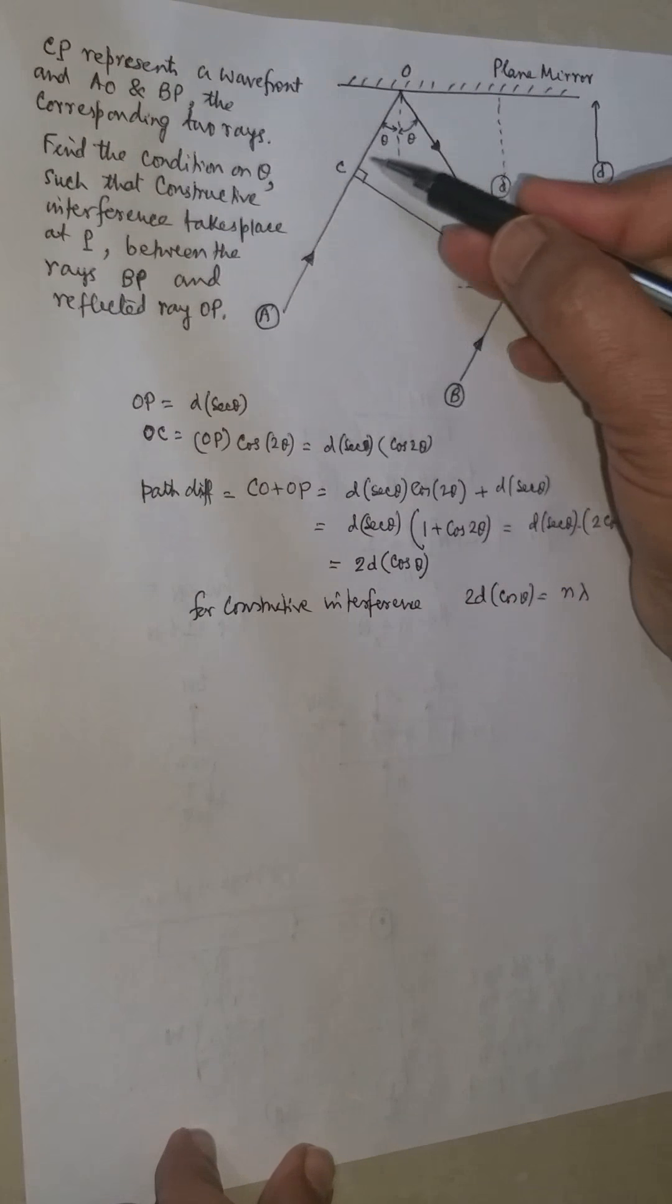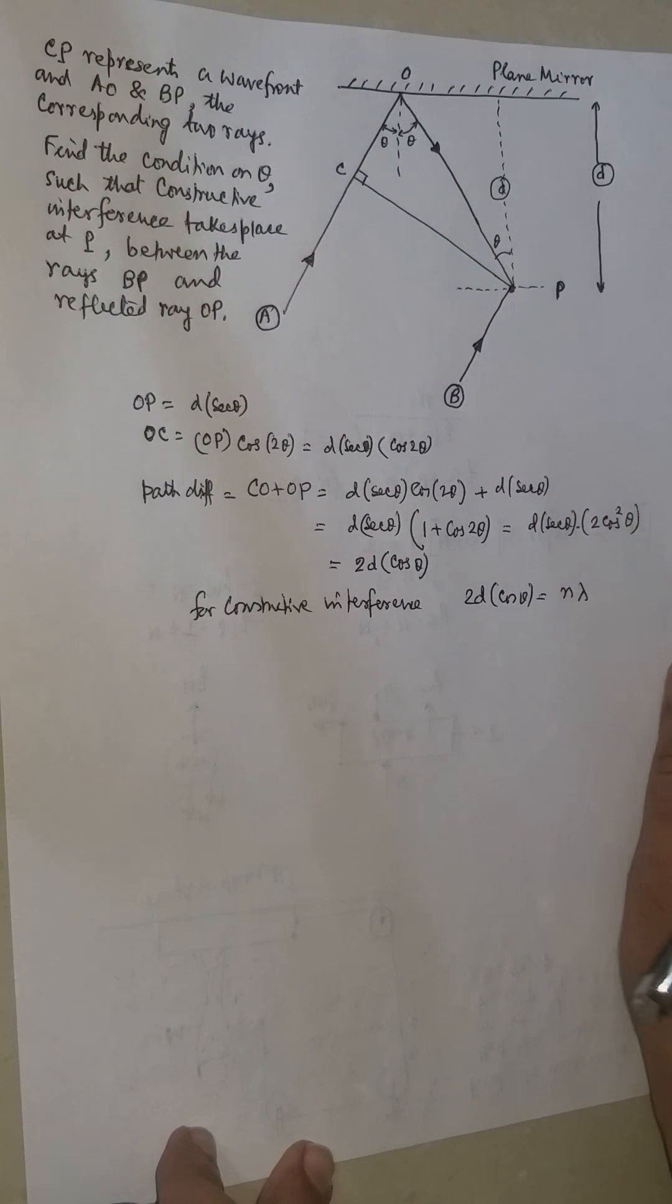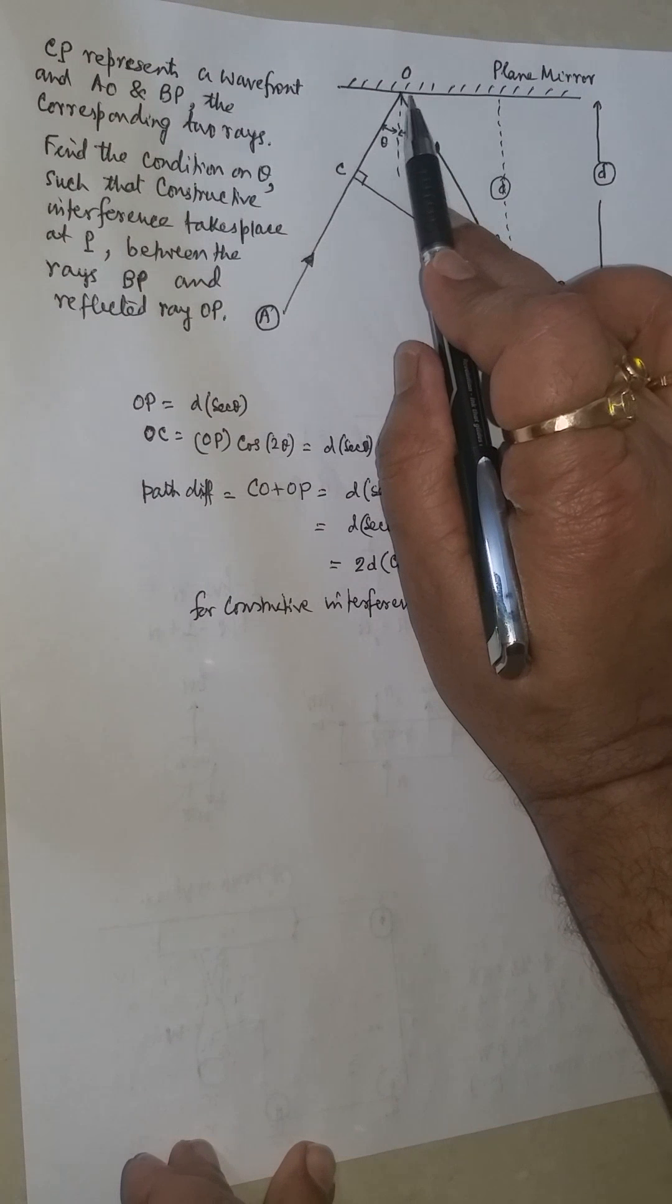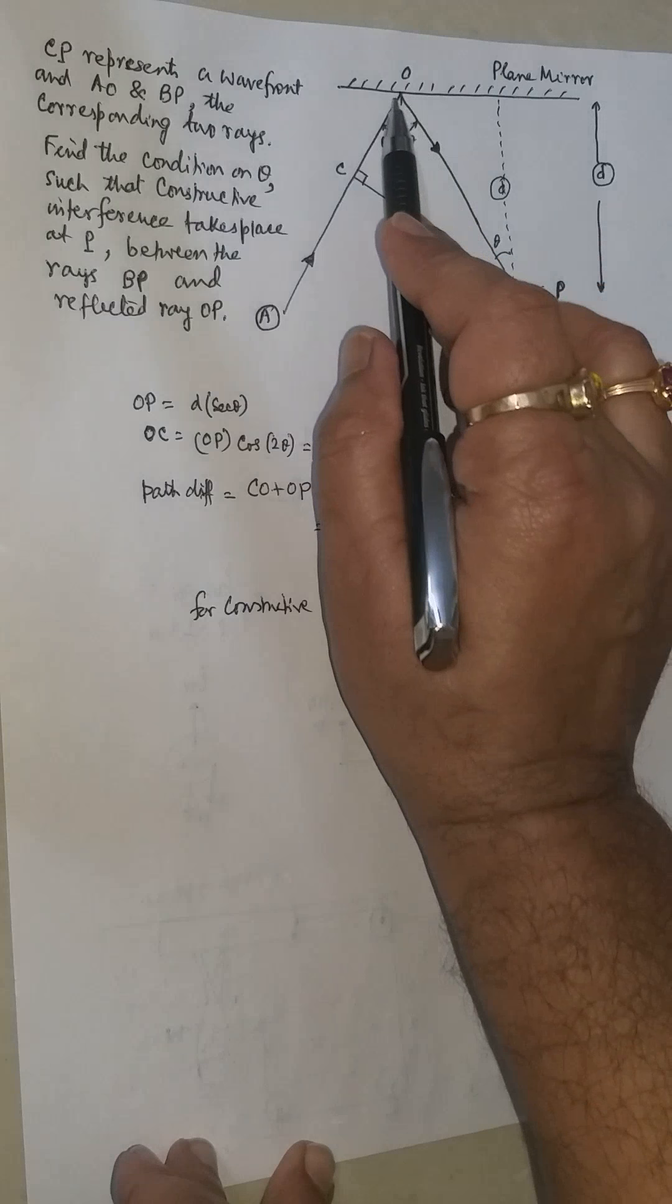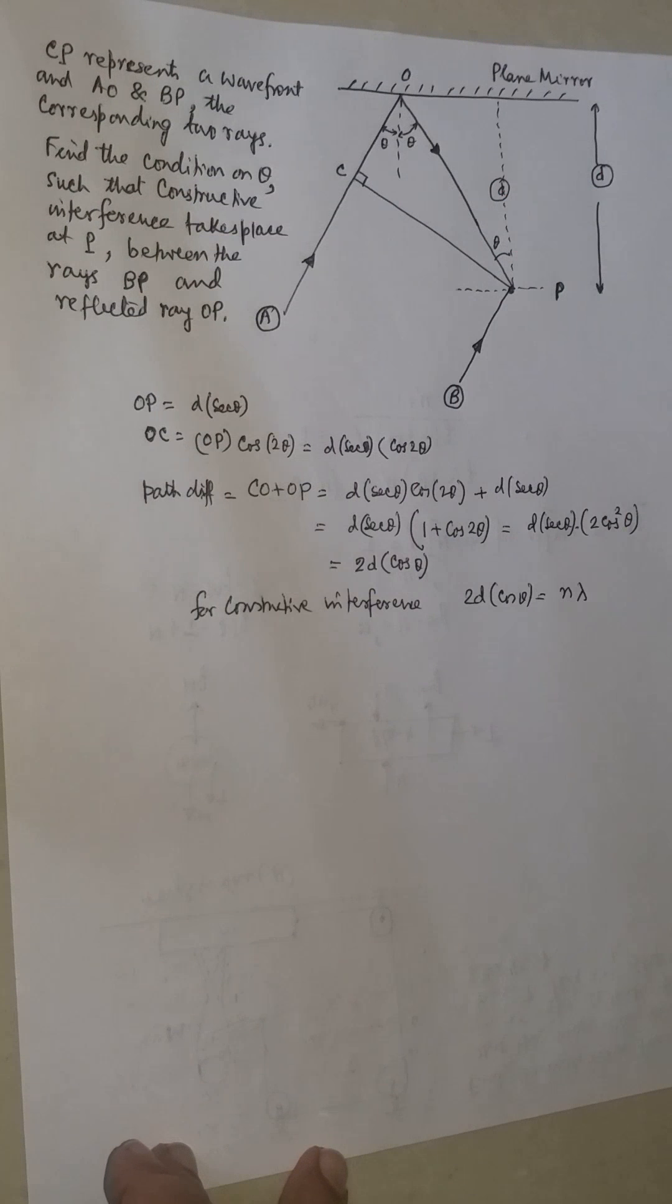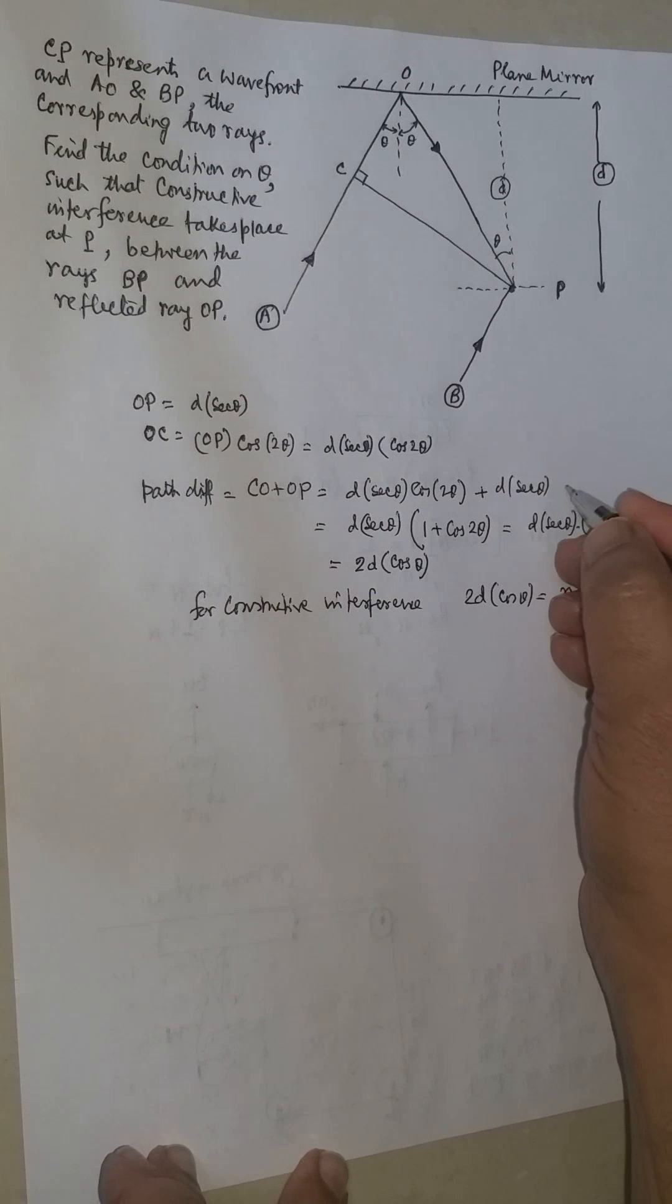Let us just observe the path difference CO and OP. But the problem is that as it is getting reflected, there will be a phase change of pi, so that the path difference is further increased by lambda by 2. So we should add a lambda by 2 here.